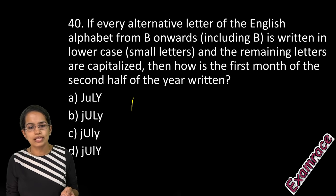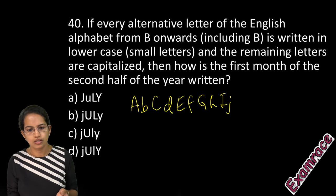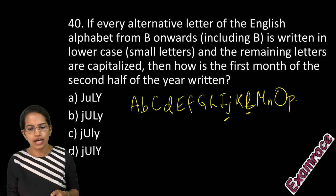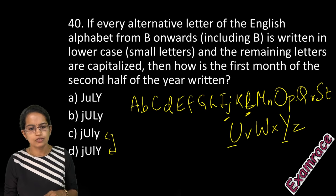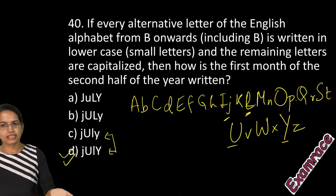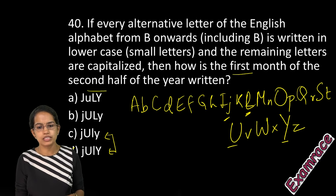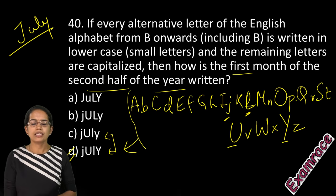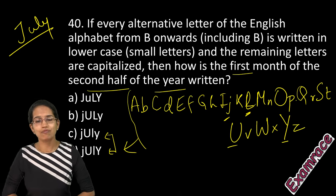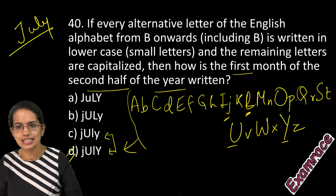The last question: write one letter capital, the next small, the second capital, the next small — alternating. Proceeding through the alphabet: J and L are small; continuing through O, P, Q, R, S, T, U, V, W, X, Y, Z — U and Y would be capital. Option D is correct. The question then asks how to write the first month of the second half of the year. The second half begins with July, so July is written in the alternating capital-small format. That covers the next 20 questions — we'll be coming up with the remaining set. Stay tuned, stay subscribed, and do share. Have a wonderful day.